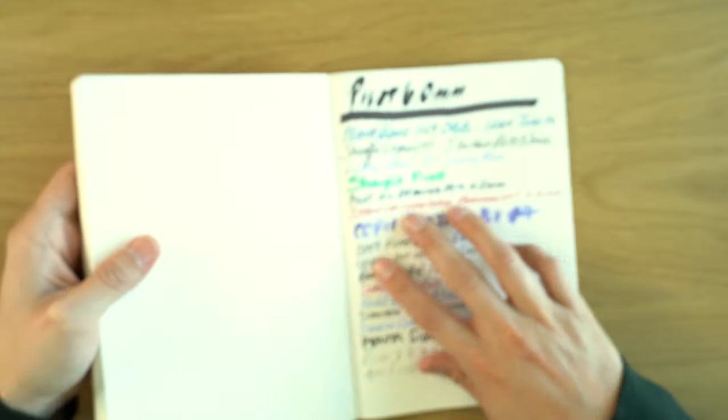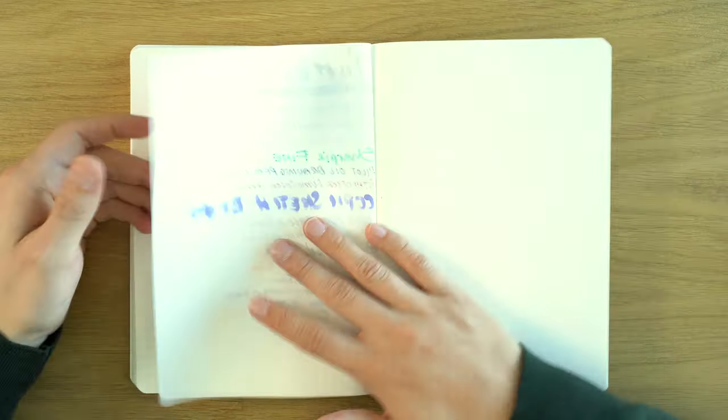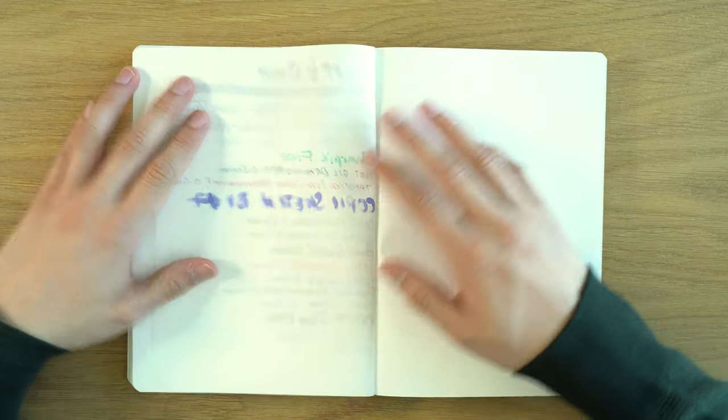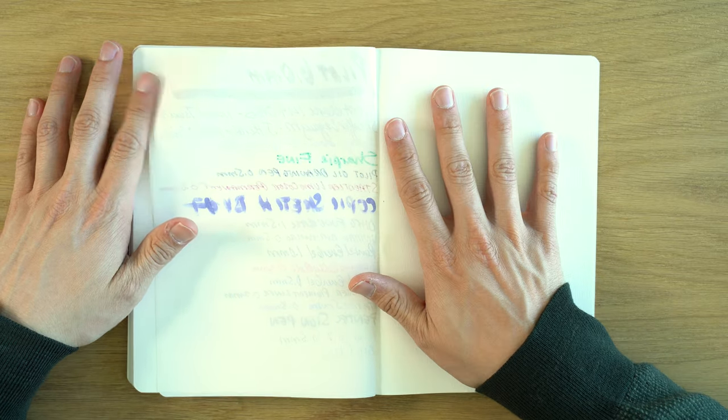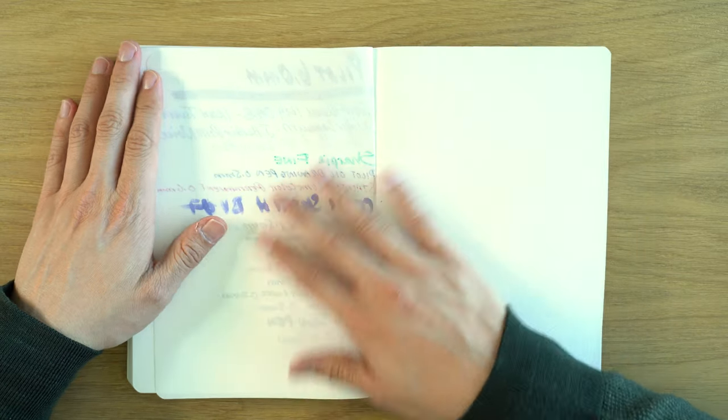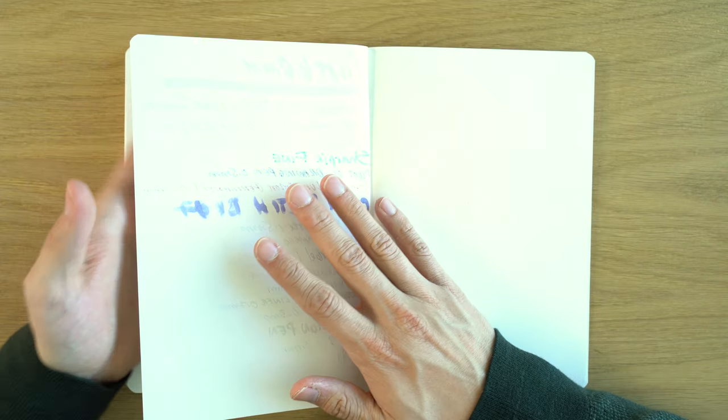So typical Tomoe River performance. You get a lot of ghosting. You can use a black sheet, which will hide that from the other side, or a dark colored sheet.